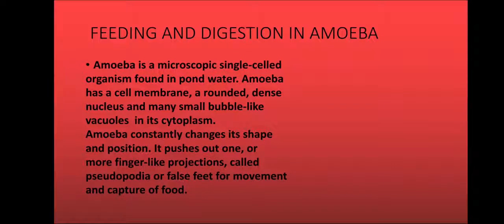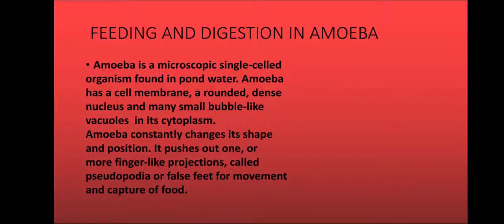Our next topic is feeding and digestion in amoeba. Amoeba is a microscopic, single-celled organism found in pond water. Microscopic means it is only visible with the help of a microscope — its size is very small and not visible to the naked eye. It is found in stagnant water, meaning water that is not moving.